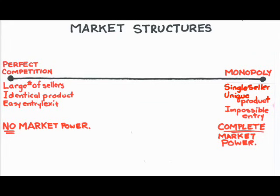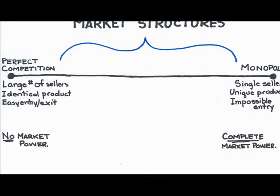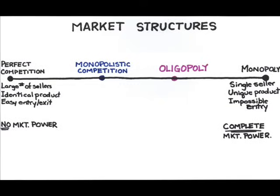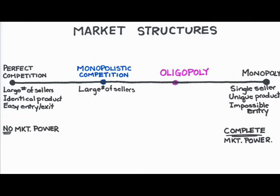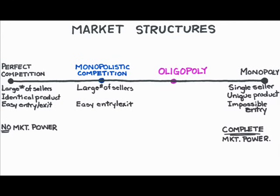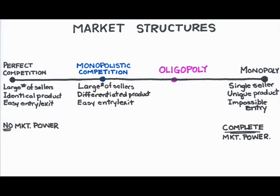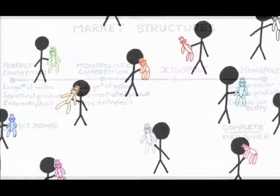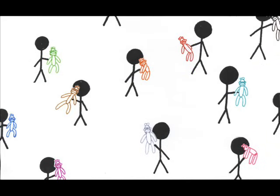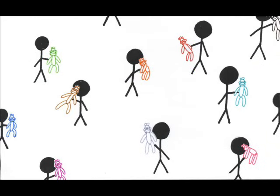Are there other structures? Sure. In fact, most real-world industries will fall somewhere in the middle ground, not at the theoretical extremes of perfect competition or monopoly. Two of these mid-range structures are monopolistic competition and oligopoly. A monopolistically competitive structure is still competitive, so there are still a lot of producers. Given that there are lots of producers, we can assume that entry into the industry is easy. Unlike perfect competition, however, the products are not exactly the same — highly similar and highly substitutable, yes, but not identical. Think about toothbrushes.